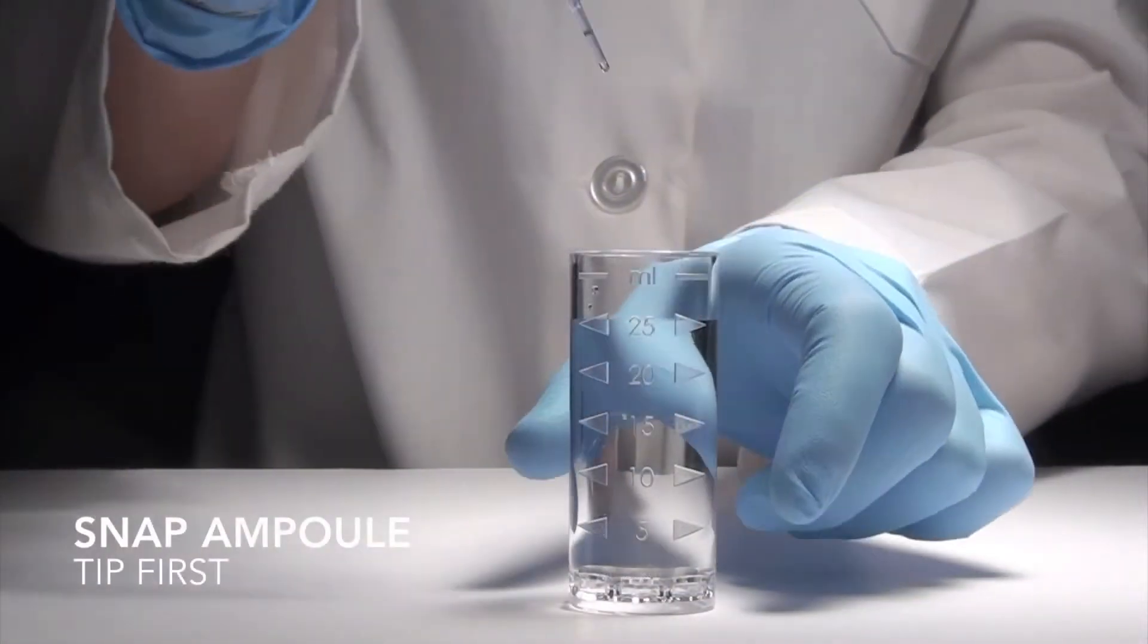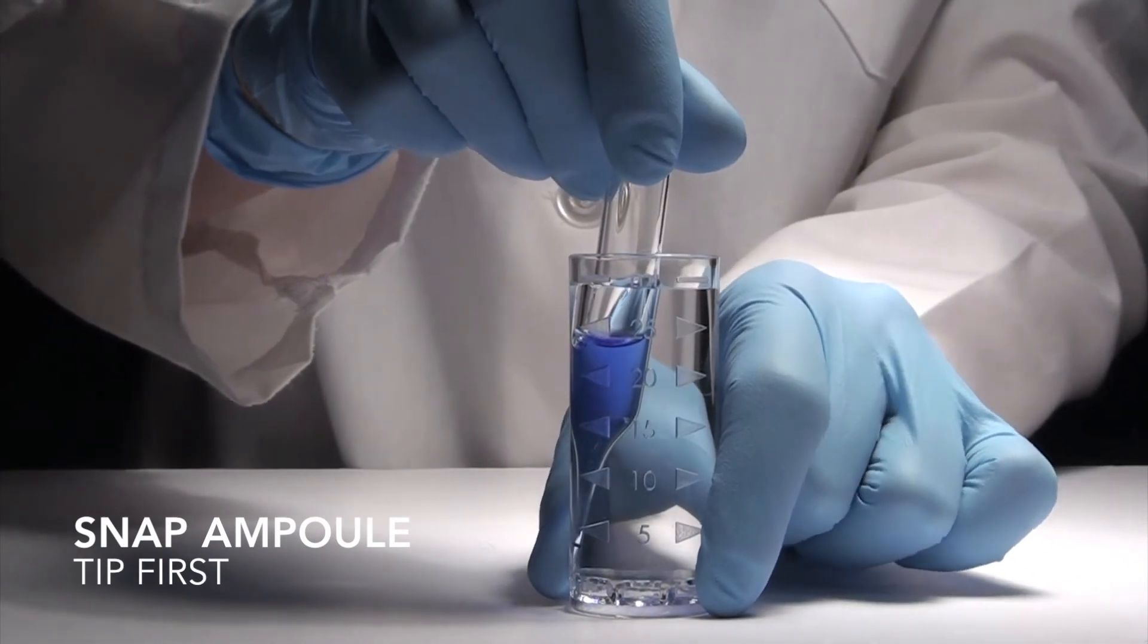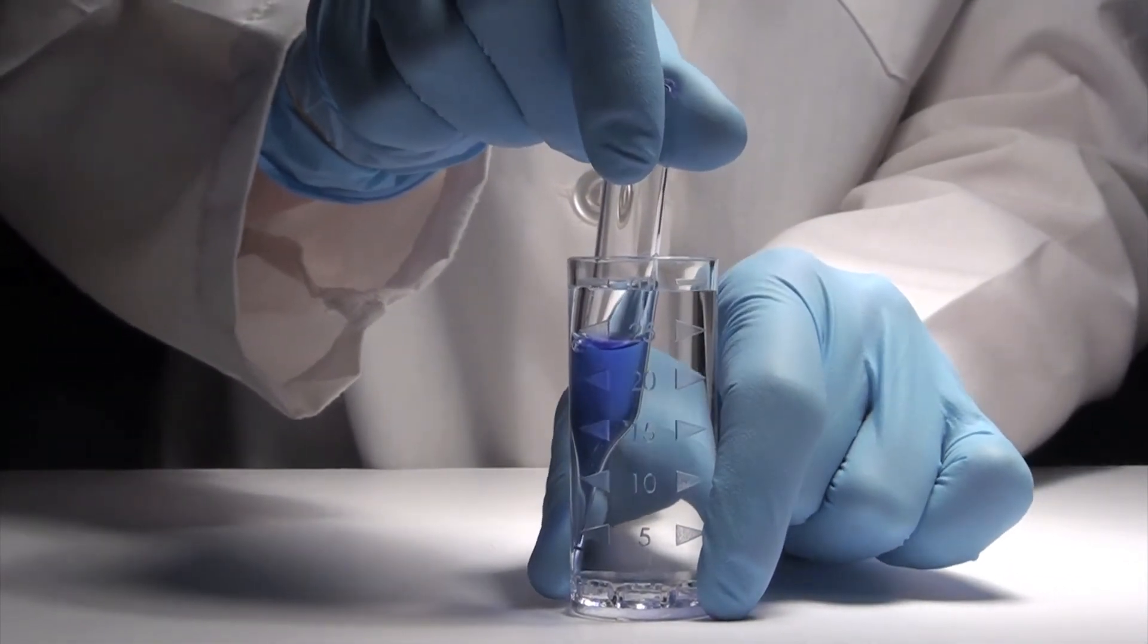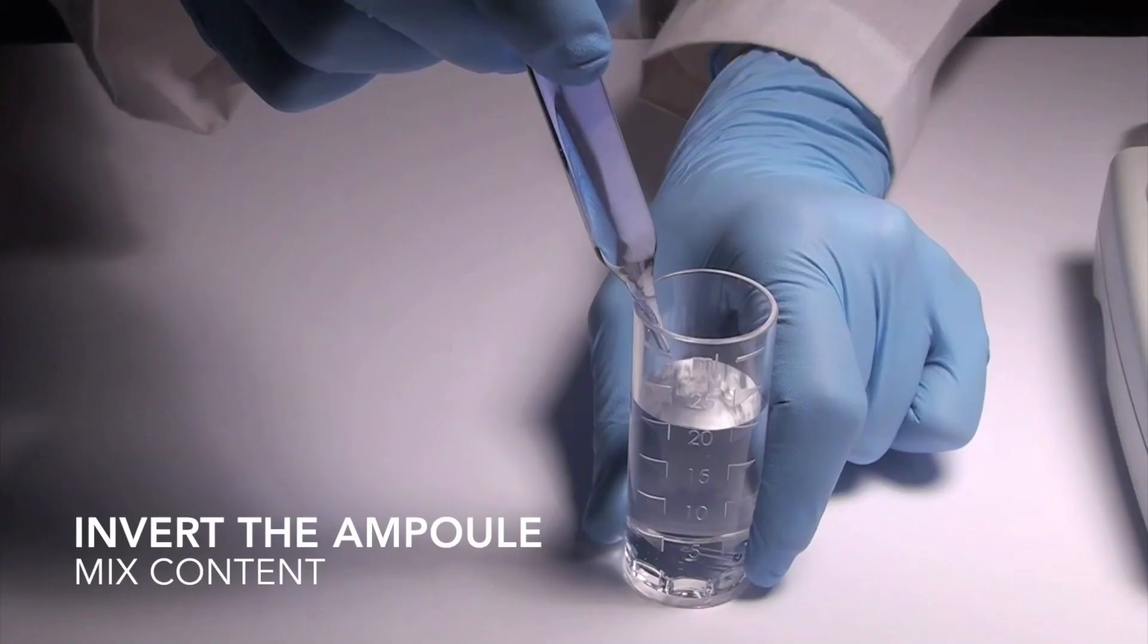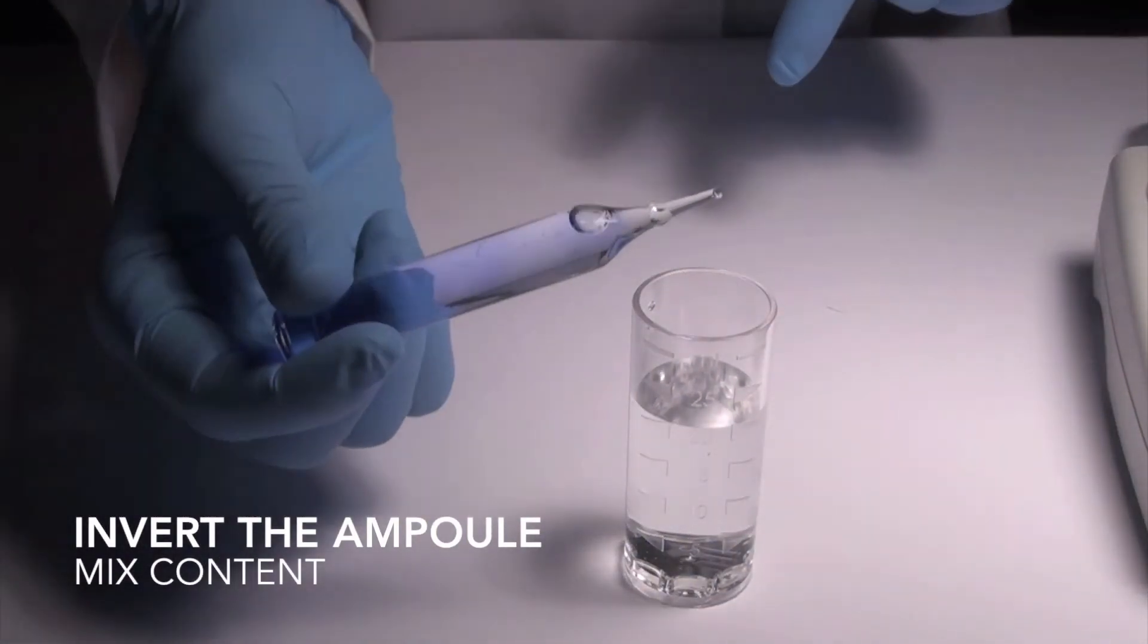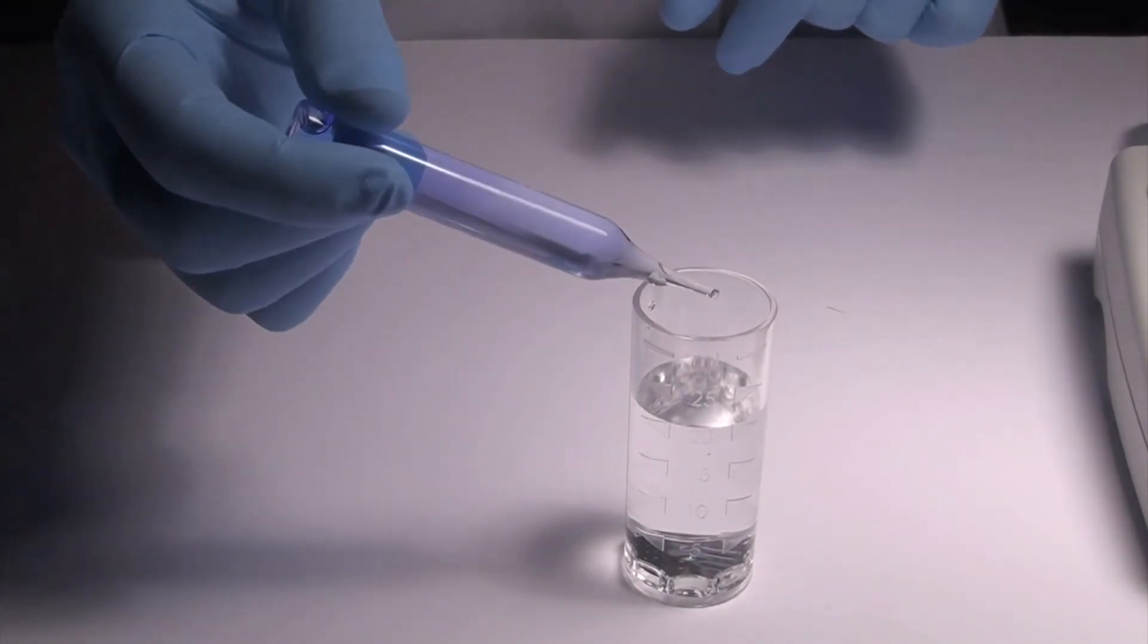Immediately, place the vacuvial ampoule from which the reagent blank value was generated, tip first, into the sample cup. Snap the tip. The ampoule will fill, leaving a bubble for mixing. Gently invert the ampoule continuously for 30 seconds, allowing the bubble to travel from end to end.